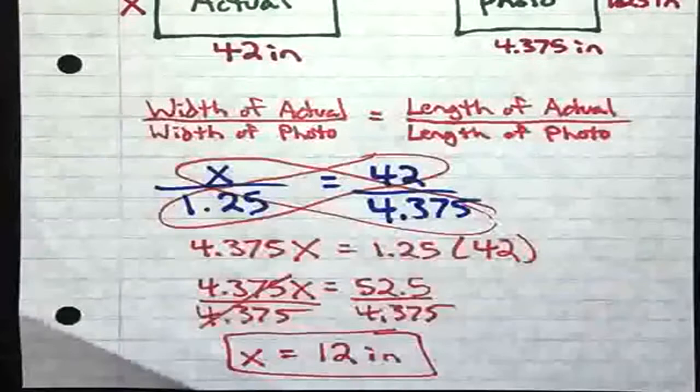Now, you can see here that we have our actual painting. Our width is X and the length is 42 inches. And then we have a photo of the painting which is a width of 1.25 inches and a length of 4.375 inches. So I wrote you guys a little proportion here so you can see how you would plug things in and see how the corresponding parts relate to each other. So in our first ratio, we have the width of the actual painting. And our width is going to be X. So we have X over the width of the photo which is 1.25 inches.